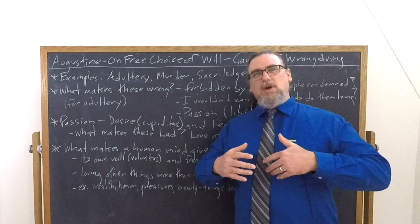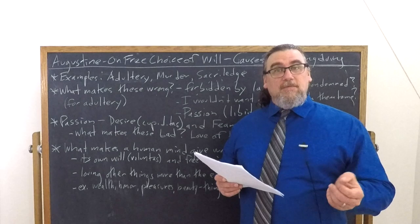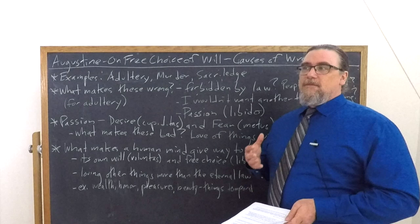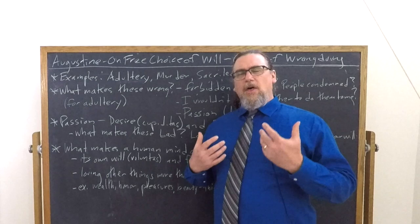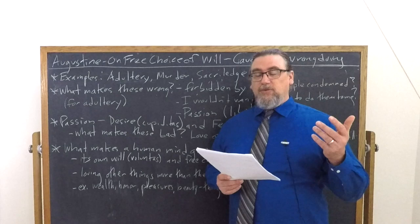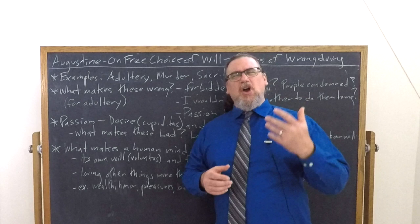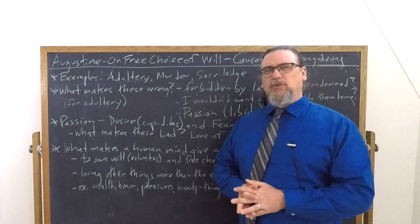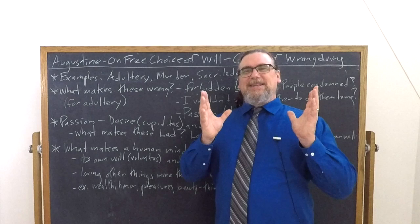So, Augustine asks his student, Avodius, tell me why you think adultery is wrong? And one very easy way of addressing this that the student sees through right away, but then falls back into, is a sort of appeal to authority, human authority. Augustine says, is adultery wrong because the law forbids it? And the student says, no, that would be putting the cart before the horse because the law forbids it because it's wrong. It's not just wrong because the law says you can't sleep with somebody else or commit some sort of infidelity.